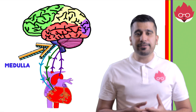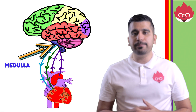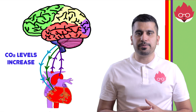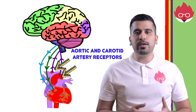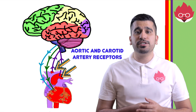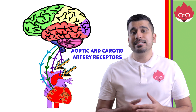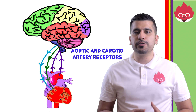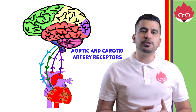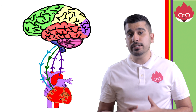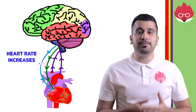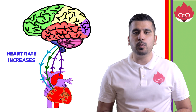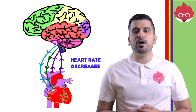The medulla in the brain controls the heart rate. When we exercise, we produce more carbon dioxide from aerobic respiration. Receptors in the aorta and in the carotid artery, which is the artery leading to the head, detect the carbon dioxide levels. This sends electrical impulses via sensory neurons to the medulla. The medulla responds by sending impulses along nerves which stimulate the heart to beat faster. When carbon dioxide levels return to normal, nerves from the medulla cause the heart rate to drop.